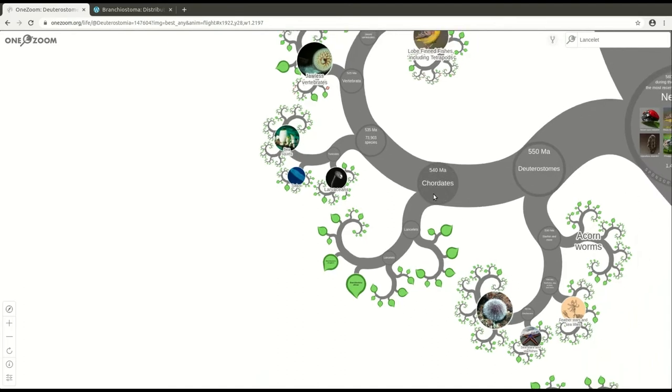So here they are on the tree of life. As you can see, they're part of the chordates, which began to develop about 540 million years ago. And it's thought that lancelets are quite similar to ancient chordates that evolved at this time due to their anatomic similarity to fossils, for example, in the Burgess Shale.